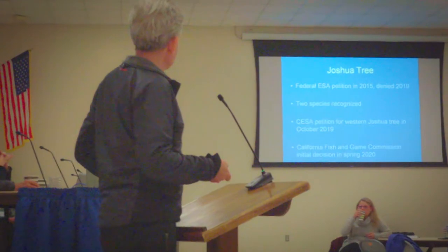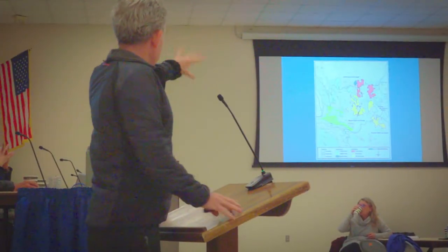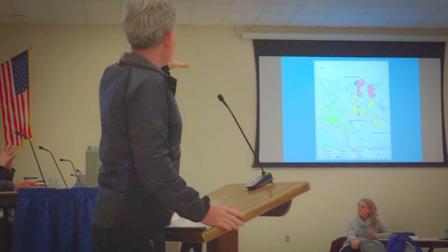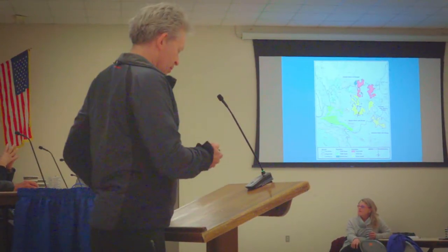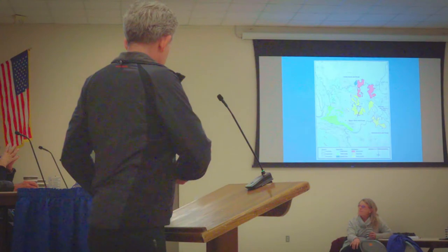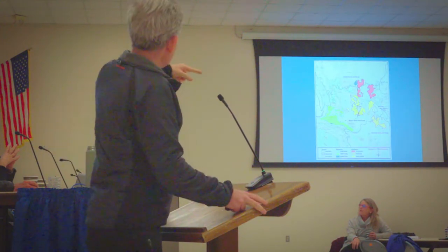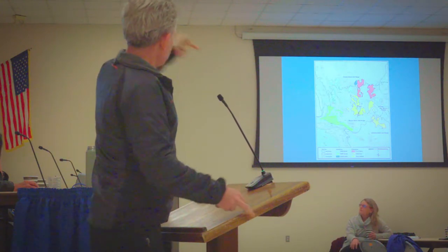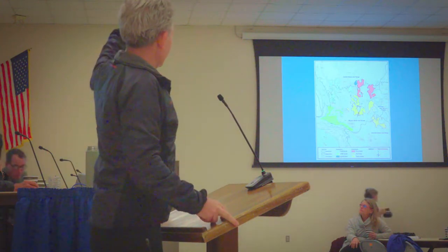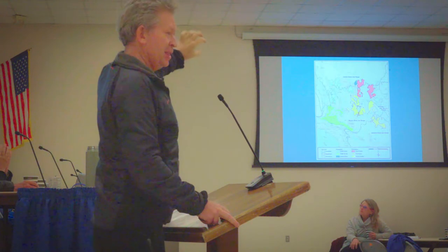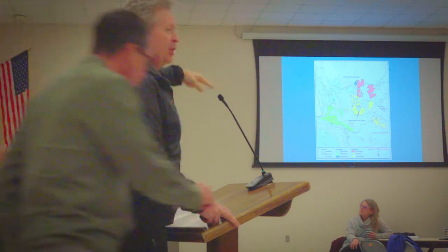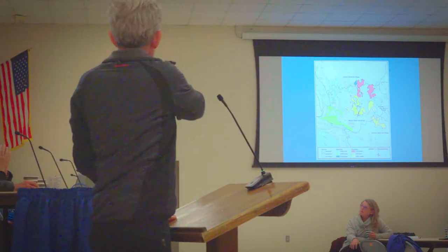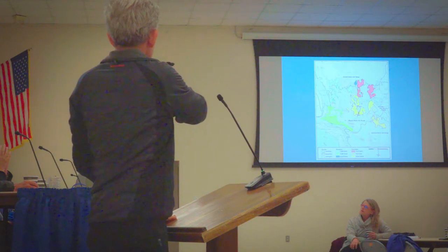This shows the range of the Joshua tree across four states. The green areas are the Western Joshua tree. The little part pointing down to the east and southeast is Joshua Tree National Park. So it covers this boomerang-shaped range across the region. This is the Western Joshua tree, and we're right about there.